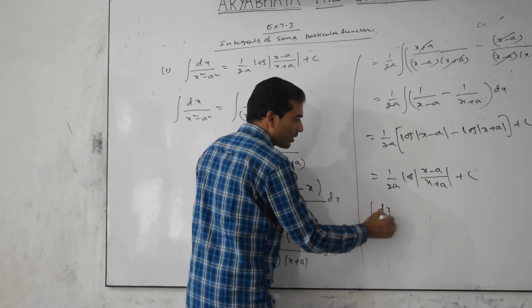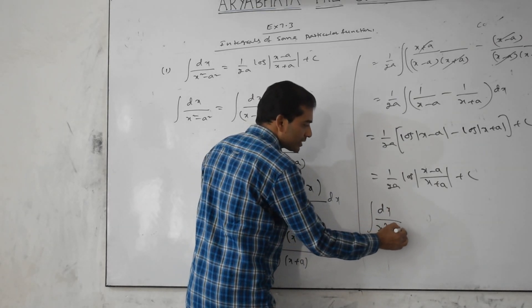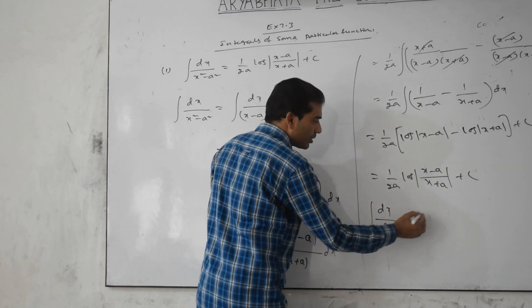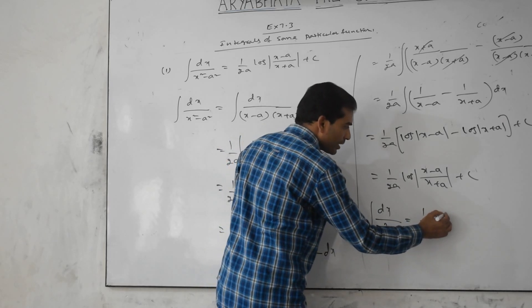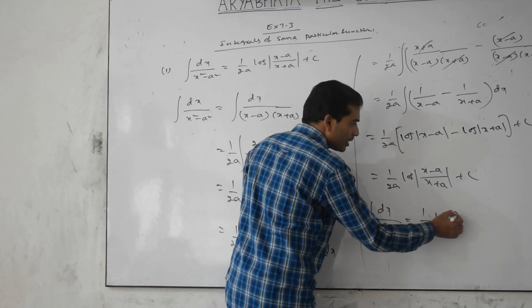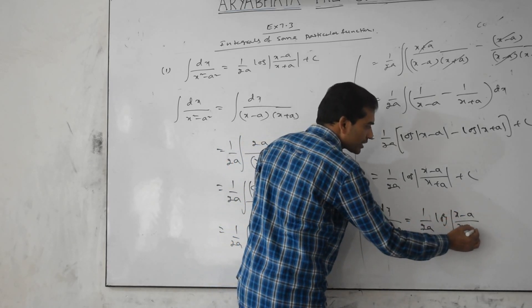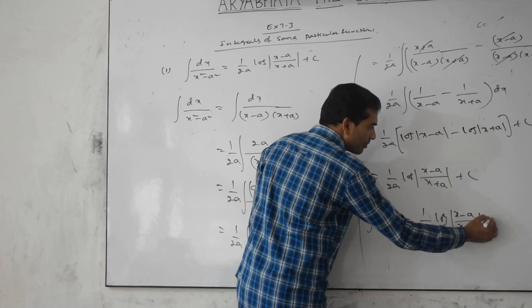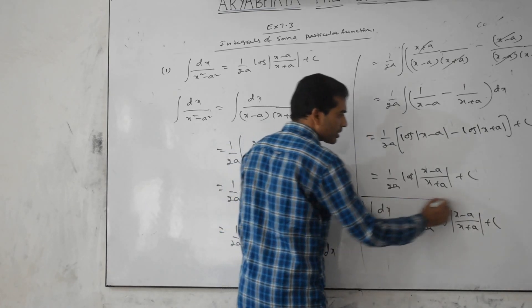Therefore, integration of dx by (x² minus a²) equals 1 by 2a times log of (x minus a) by (x plus a) plus c. This is the most important formula.